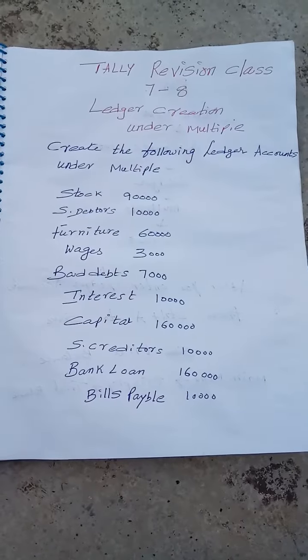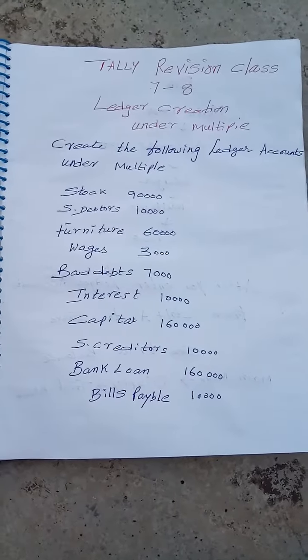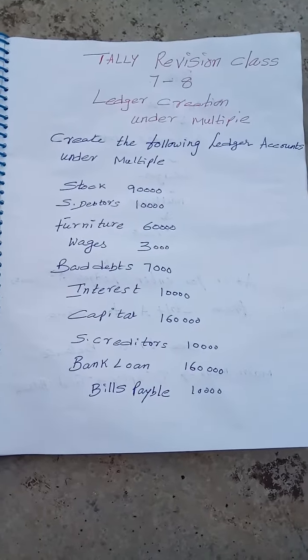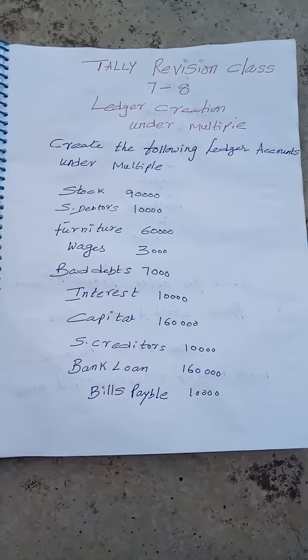Here there are some ledger balances like stock, debtors, furniture, wages, bad debts, interest, and capital.